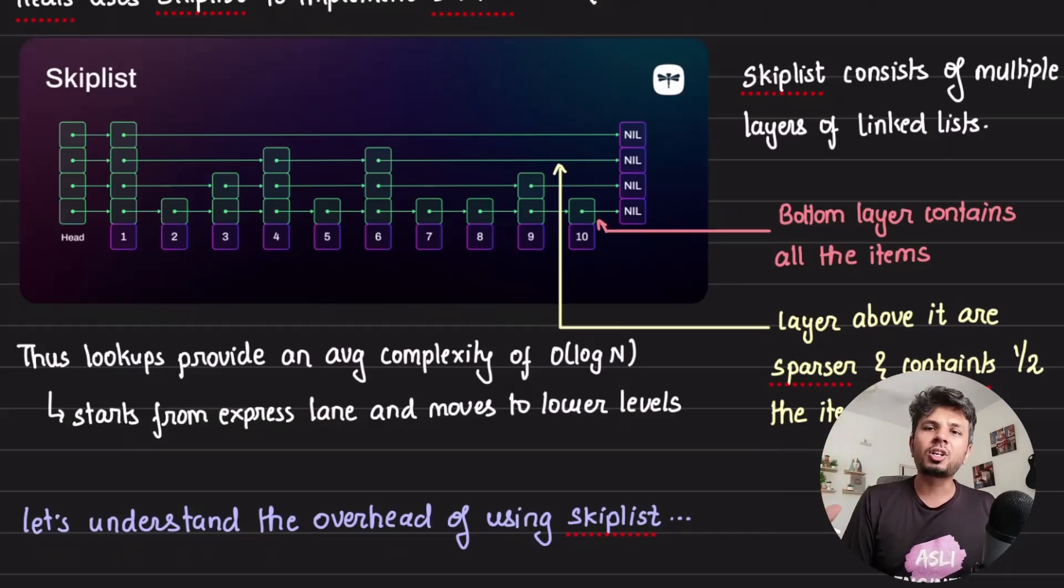You have additional layers that sit on top of the bottom layer. Each layer above the bottom layer has half the number of elements. Think of this as express lanes and slow lanes.